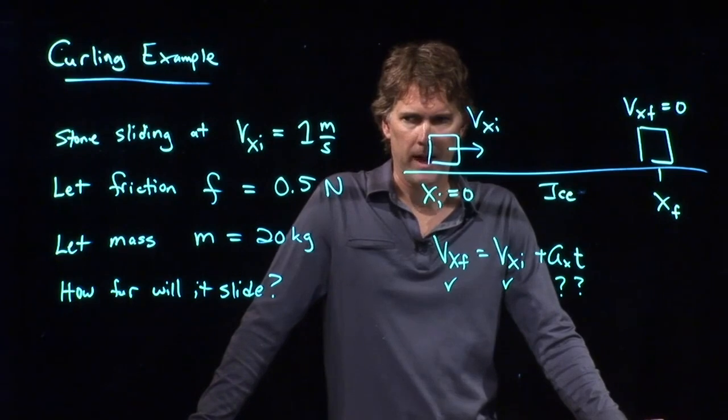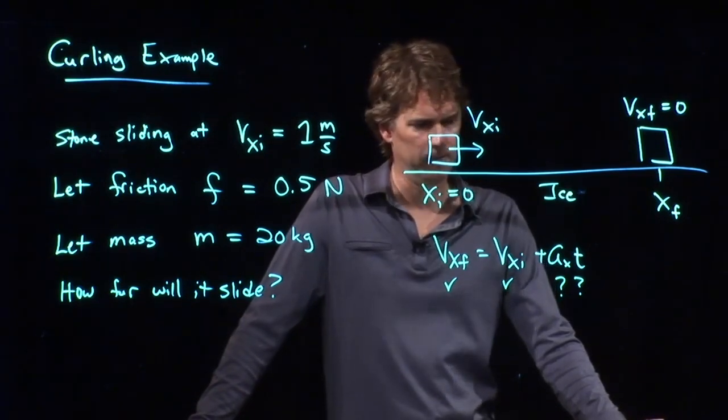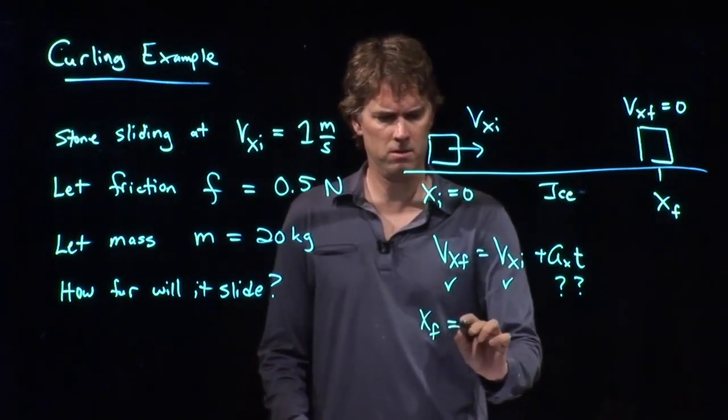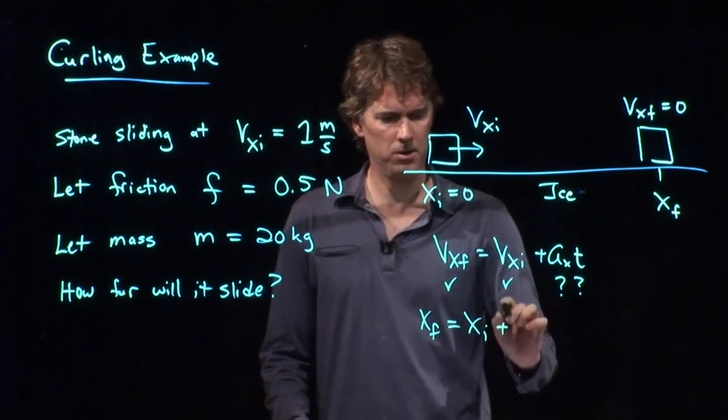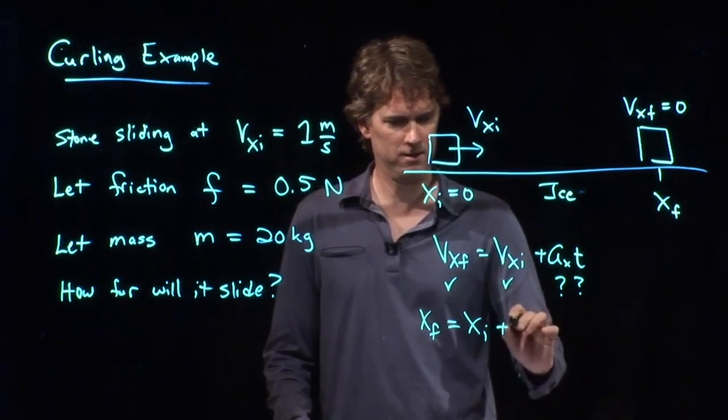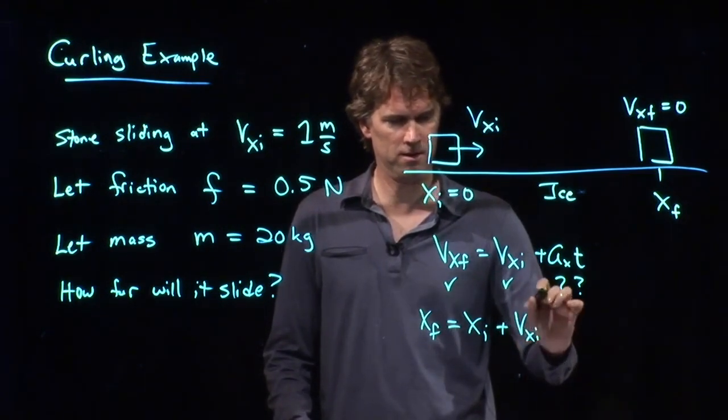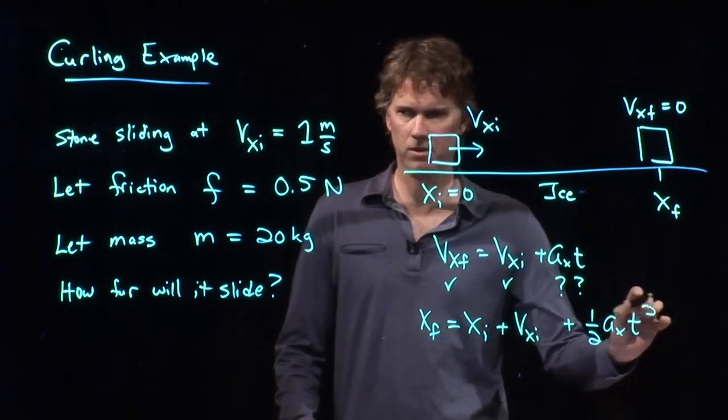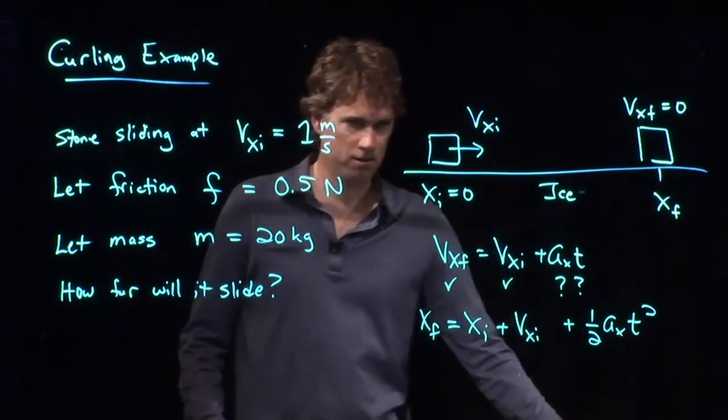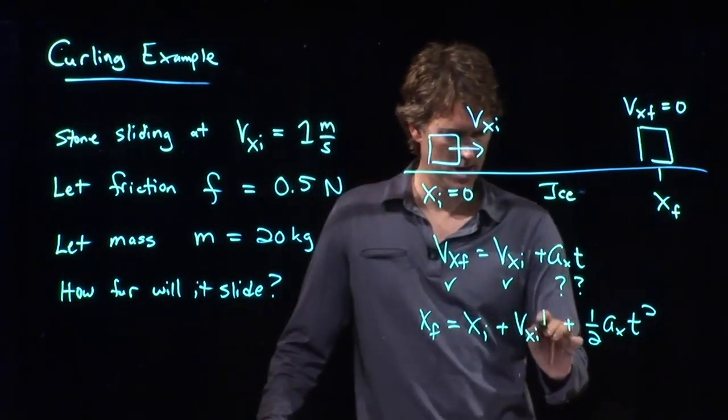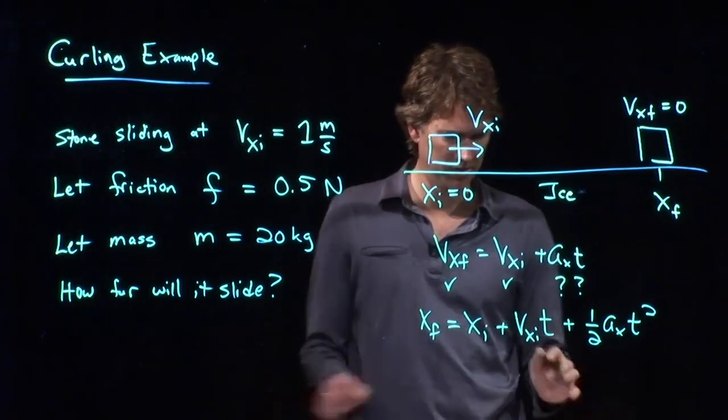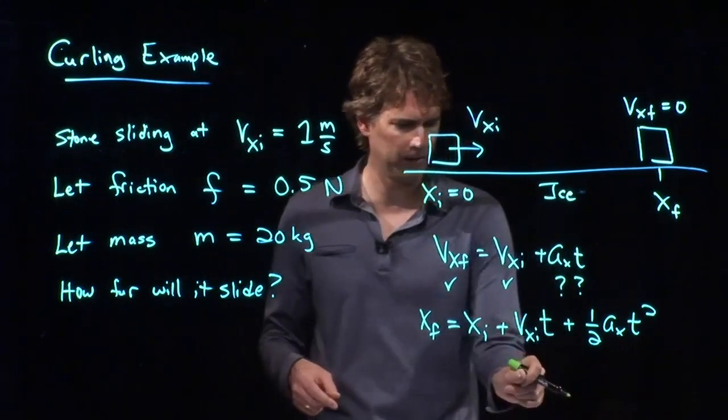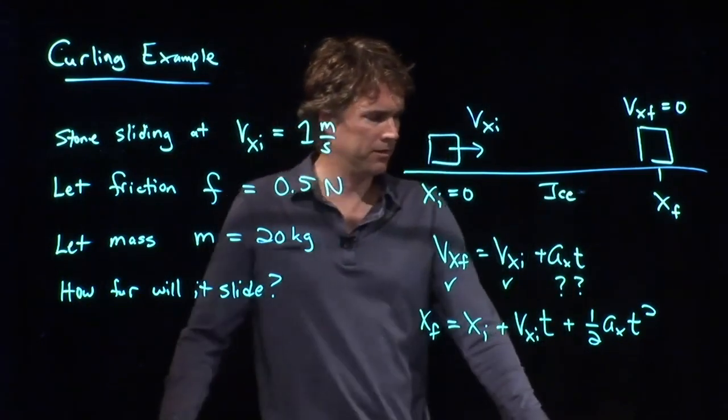What other kinematic equation might we look at? Yeah, Megan? X final equals X initial plus V initial T plus 1 half A T squared. Anything missing there, guys? T? Yeah, that's the T initial. Right here, right? You can just tell that T's got to be there just from units, right? Meters per second, I've got to multiply by seconds to get meters.